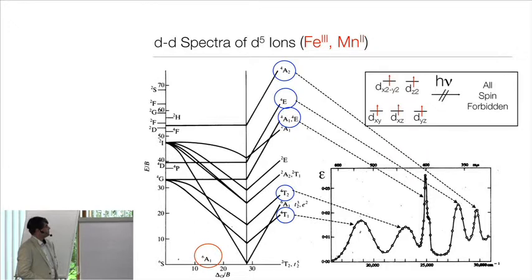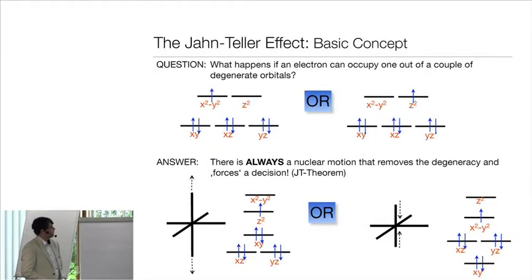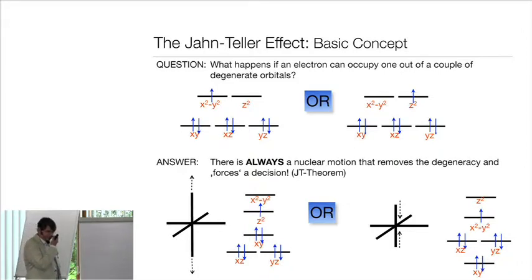The Tanabe-Sugano diagrams are a fantastic organizing principle that brings order and meaning into a vast array of experimental data. We need to talk about a few more aspects of coordination chemistry, and one of them is the Jahn-Teller effect.